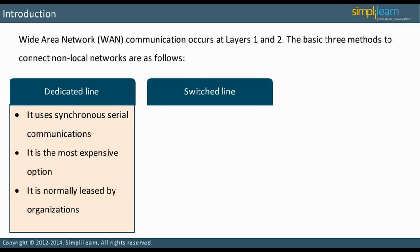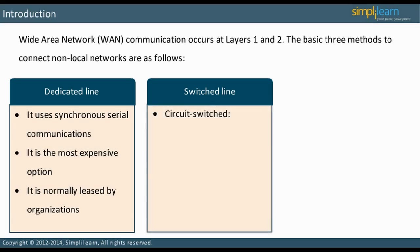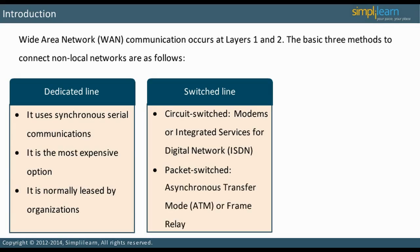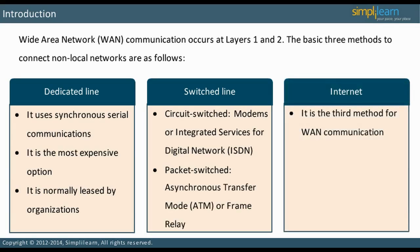The second method for WAN communication is switched line. This is broken down into two categories: circuit-switched and packet-switched. Circuit-switched options include modems or ISDN. Among the packet-switched options are ATM or Frame Relay. The third method for WAN communications is using the Internet.